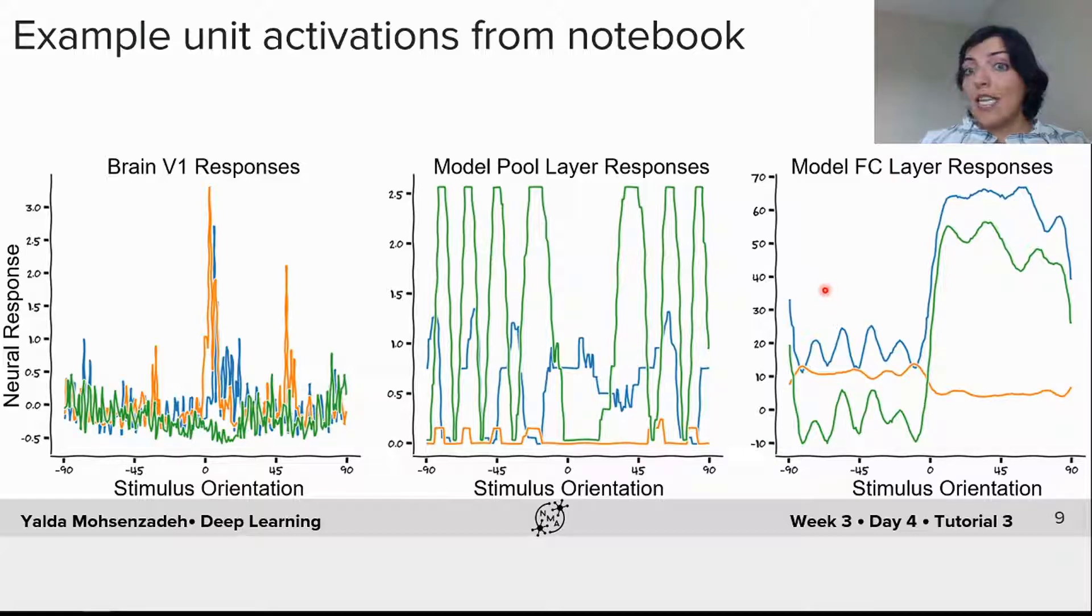More interestingly, units in model fully connected layer show a categorical selectivity. For example, the blue and green units are highly selective to positive orientations but not negative orientations. On the other hand, the orange unit is highly selective to negative orientations compared to positive ones.